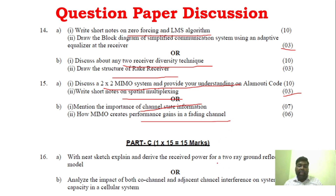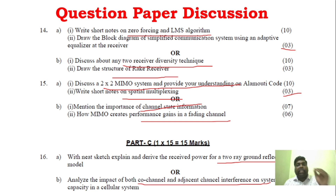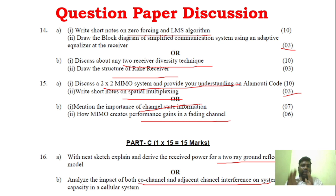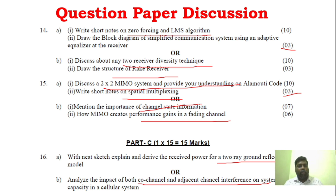For Part C, there is a 2-ray ground propagation model — very simplest question for Unit 1, just study 2 models. For Unit 2, co-channel and adjacent channel interference and system capacity — very simplest questions. If you go through all the questions and videos I have given for the 5 units, that is more than enough. You will be able to write all the questions.